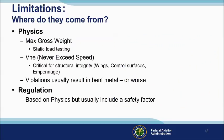Before we go, let's have a few words on aircraft limitations and where they come from. Limitations are derived from physical laws. For example, certification testing involves loading an airframe to the point of structural failure — max gross weight is determined in part with reference to that testing. VNE is derived, in part, from flight testing where the onset of control flutter is experienced. Violation of physical limitations often results in structural failure. Regulatory limitations are based on physics too, but they usually include a safety factor.